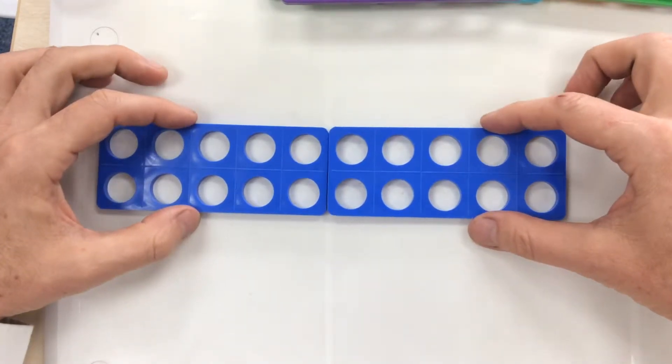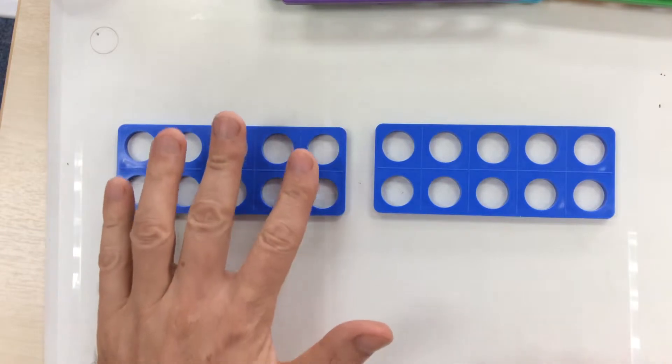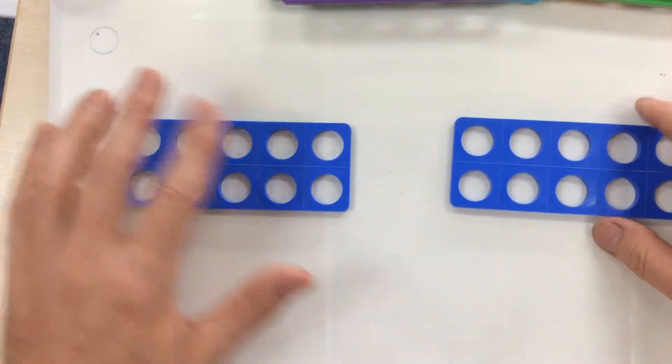So I'm going to take my 20 and I'm going to split it into two equal parts, leaving me with 10. Half of 20 is 10.